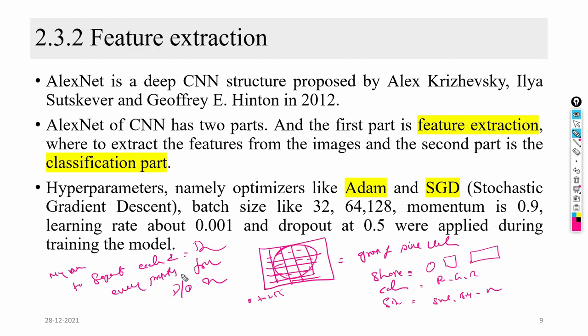Unless we separate the features, we cannot train the model. Training the model requires dominant features — more significant features — so the model can understand the patterns and correlations among those dominant features.